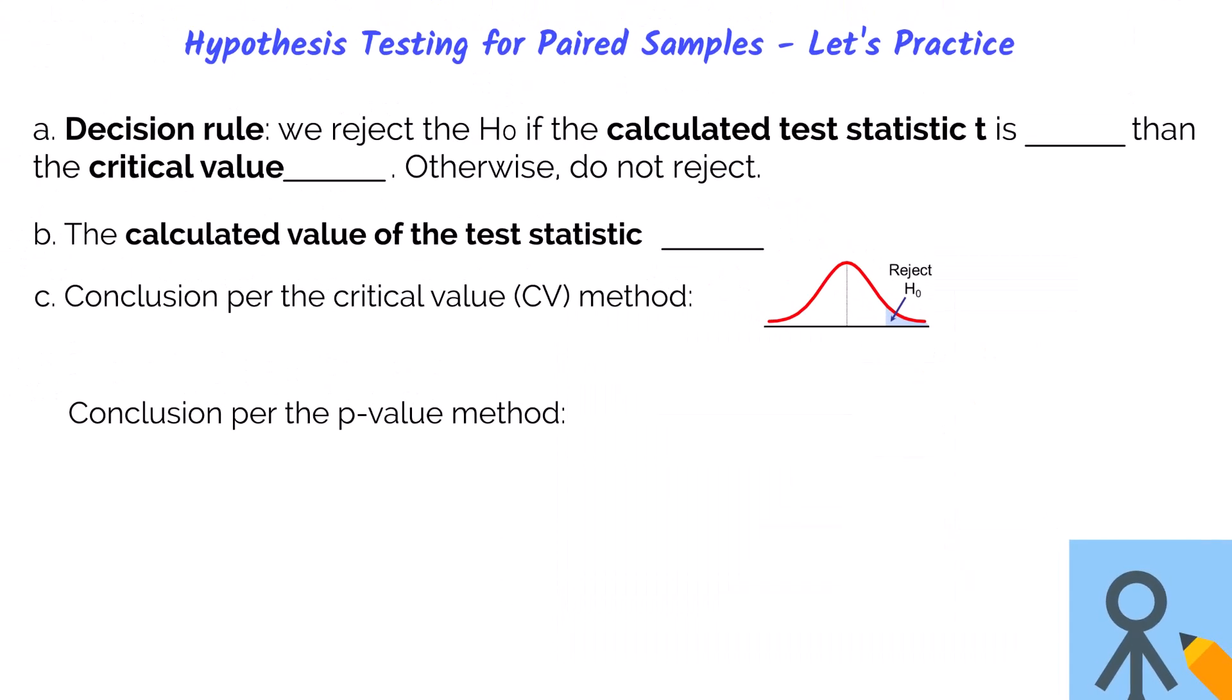The decision rule states that we will reject the null if the calculated value of the test statistic t is greater than the critical value of 2.82. Otherwise, we do not reject. In part b, we know the calculated value of the test statistic was 3.17. So 3.17 is greater than 2.82 and is in our rejection region. Therefore, we will reject the null hypothesis.